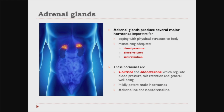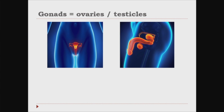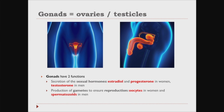They produce vital hormones like cortisol and aldosterone, which regulate blood pressure, salt retention, and general well-being. The adrenals also secrete mildly potent male hormones which have a role in females, and adrenaline and noradrenaline — the hormones of stress. The gonads — ovaries in women and testicles in men — have two functions: the secretion of sexual hormones (estradiol and progesterone in women, testosterone in men) and the production of gametes to ensure reproduction, oocytes in women and spermatozoids in men.